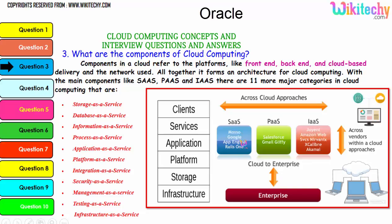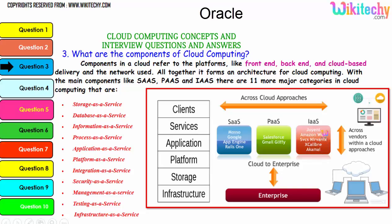For software as a service, typical examples are App Engine and Google. For platform as a service, examples include Gmail, Glyphi, and Salesforce. For infrastructure as a service, there are many companies such as Amazon Web Services, Delvanix, Excalibur, Akamai, and Joyent.